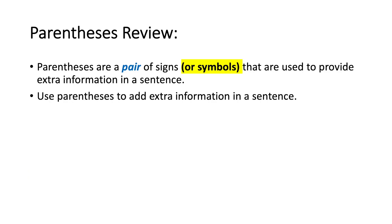For a quick review: parentheses are a pair of signs or symbols. They're used to provide extra information in a sentence. You must use both — you can't just have one parenthesis, you have to have both. And you use them to provide extra information in a sentence.